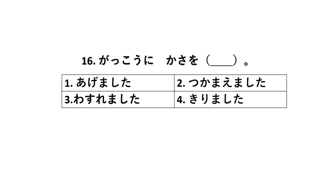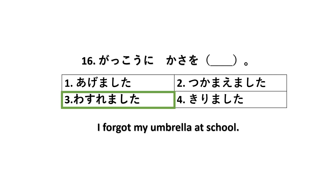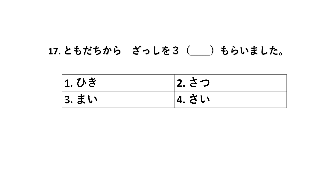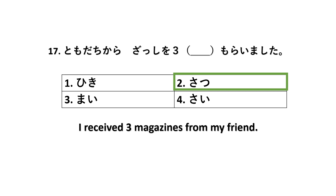Number 16: Gakkou ni kasa wo [blank]. The correct answer is wasuremashita — I forgot my umbrella at school. Number 17: Tomodachi kara zasshi wo san [blank] moraimashita. This is about counters. The correct counter is the second one, satsu. Zasshi wo san satsu moraimashita — I received three magazines from my friend.